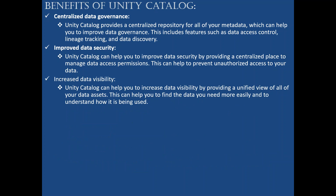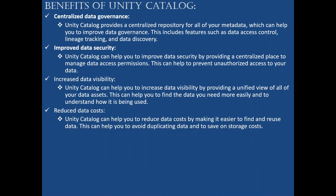Next, increased data visibility. Unity Catalog can help you increase data visibility by providing a unified view of all your data assets, making it easier to find the data you need and understand how it is being used. For example, data written in workspace one can be accessed or viewed from workspace two — that is the increased visibility.